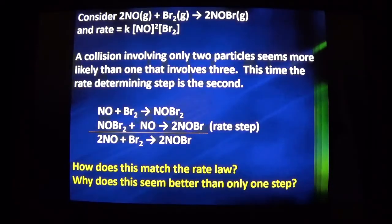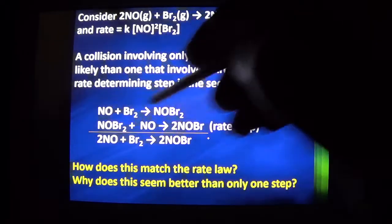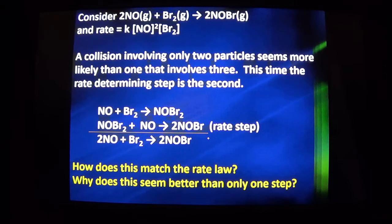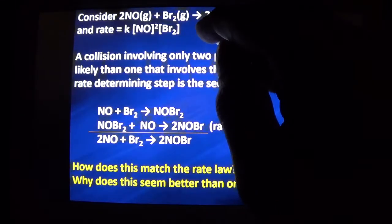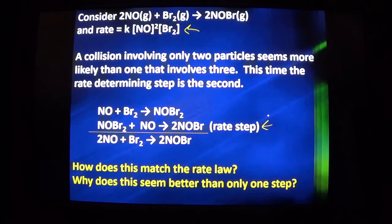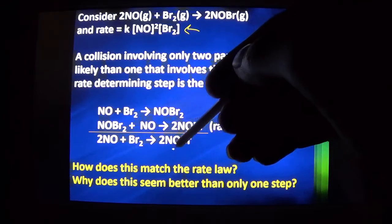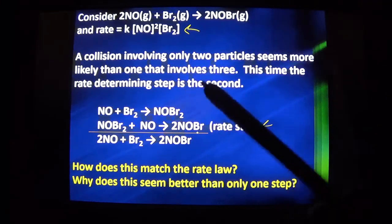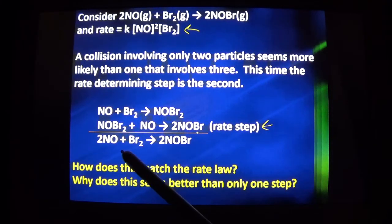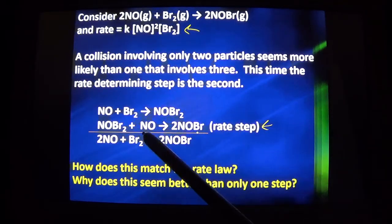What they're more likely to ask of you is take a reaction mechanism they're offering and evaluate it. A good mechanism does two things: has the rate law match the coefficients of the rate determining step, and it adds up to match the overall balanced equation. Let's evaluate this mechanism based on this information. This added up. I have two NOs matching two NOs, BR2 matching BR2, two NOBRs matching two NOBRs. Yes, that part works.